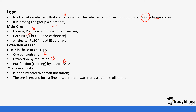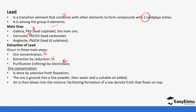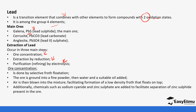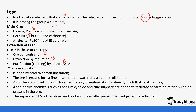In froth flotation, the ore is ground into a fine powder and then water and oil are added. We covered froth flotation in the introduction to this topic — you can go back and check the process in detail. Air is blown into the mixture, forming a low-density froth that floats on top. Chemicals such as sodium cyanide and zinc sulfate are added to facilitate the separation of lead sulfide. The separated lead sulfide is then dried and broken into small pieces before being subjected to reduction.